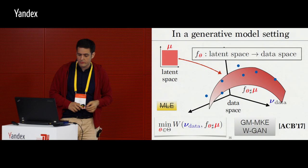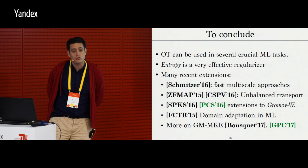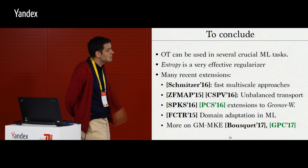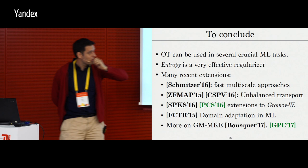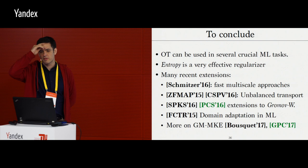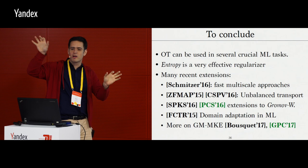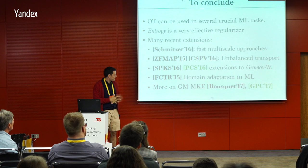To conclude: optimal transport can be used in several crucial machine learning tasks. Entropy is a very effective regularizer, and people have been working on these topics quite a lot. There are also some interesting generalizations of optimal transport, some related to work by Alex a few years ago on kernelized sorting — quadratic — and about how you can ensure that a map maps a point X such that if X and Y are not too far away, F(X) and F(Y) are not too far away either.